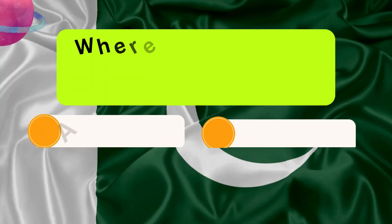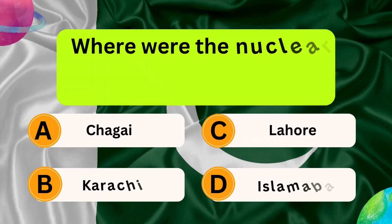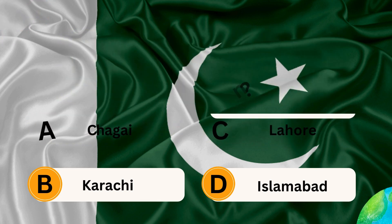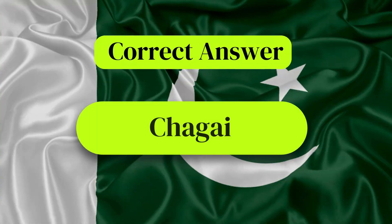Where was the nuclear test conducted in Pakistan? Options: Chagri, Lahore, Karachi, Islamabad. Correct answer is Chagri.